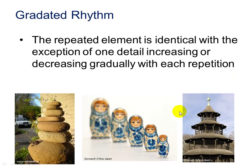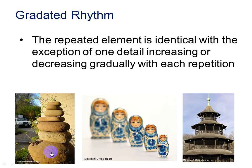Gradated rhythm is the repeated element which is identical with the exception of one detail that is usually increasing or decreasing. For example, the element here is size — we have several different rocks increasing in size from top to bottom. Here we use size to create gradated rhythm, but we're also using focus: this little doll is more in focus than this one, and this one is a little more in focus than the next. You can see how we can use something besides size to create gradated rhythm.